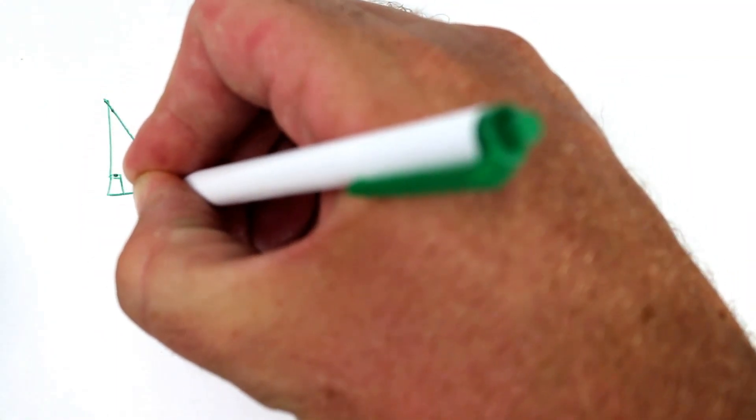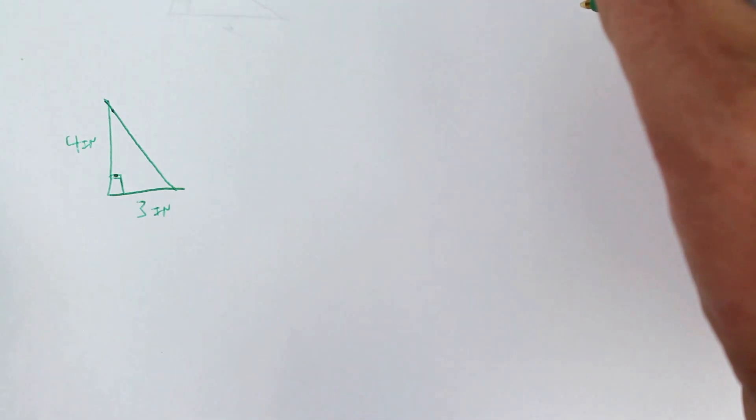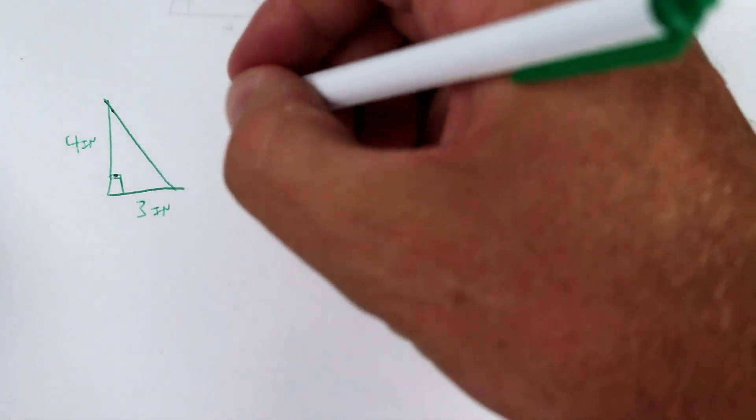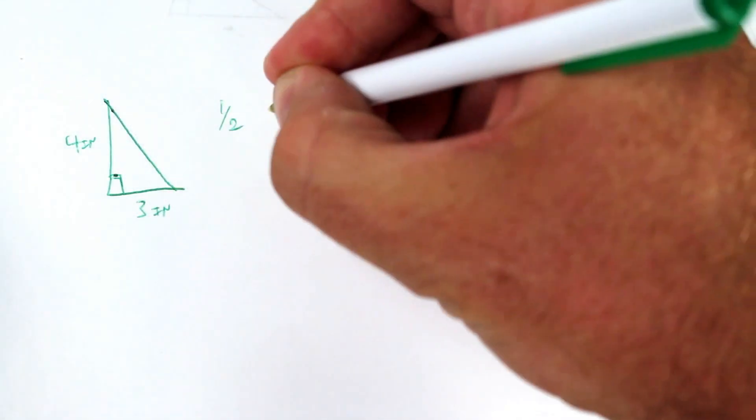Let's see a right triangle like this one with a base of three inches and a height of four inches. So you're going to plug those into your equation.